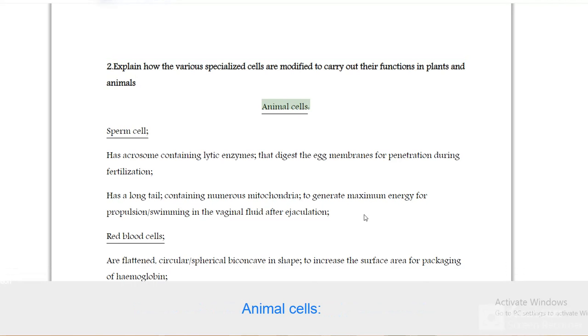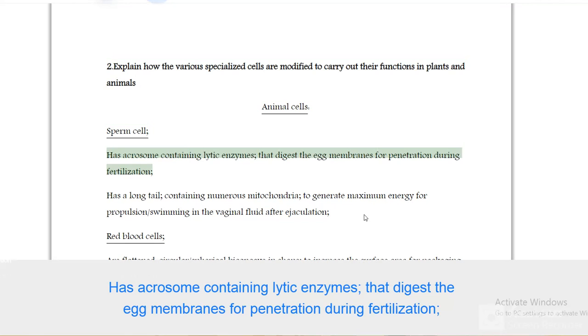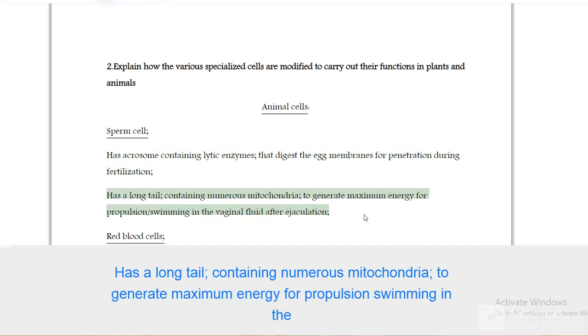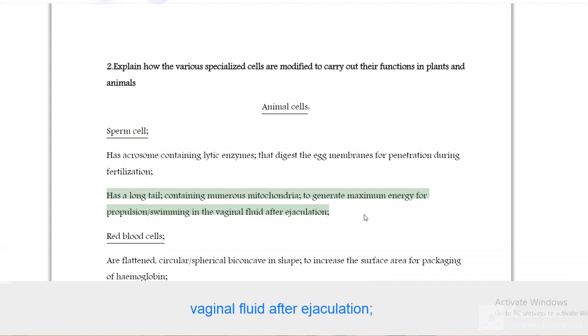Animal cells. Sperm cell has acrosome containing lytic enzymes that digest the egg membranes for penetration during fertilization. Has a long tail containing numerous mitochondria to generate maximum energy for propulsion, swimming in the vaginal fluid after ejaculation.